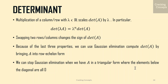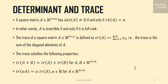Swapping two rows or columns changes the sign of det(A). Because of the last three properties, we can use Gaussian elimination to compute det(A) by bringing A into row echelon form. We can stop when A is in triangular form, where all elements below the diagonal are zero. Recall that the determinant of a triangular matrix is the product of all diagonal elements.